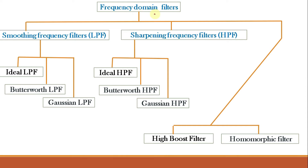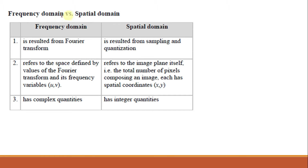Frequency domain filters can be classified as low pass filters, high pass filters, and other variations like high boost filter and homomorphic filter. The low pass filters can be classified into three categories: ideal low pass filter, Butterworth low pass filter, and Gaussian low pass filter. Similarly, the sharpening frequency filters or high pass filters can be classified into ideal high pass filter, Butterworth high pass filter, and Gaussian high pass filter. Before going into the details, let us understand the difference between frequency domain filtering and spatial domain filtering.